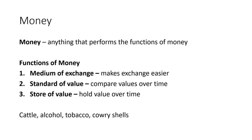Over time, we've used a lot of different things for money: cattle, alcohol, tobacco, cowrie shells — all sorts of things have been used for money.